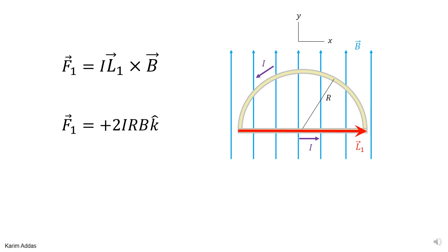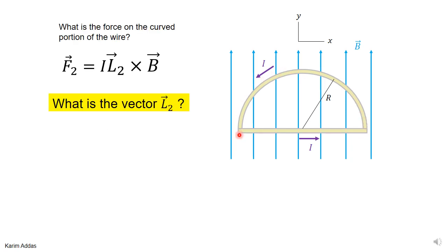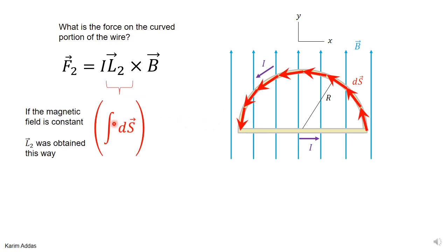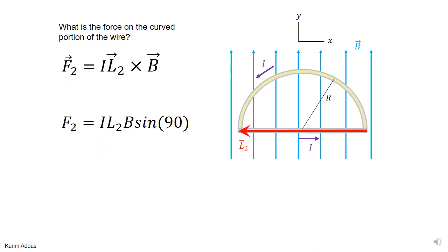Now let's find the force on the curved part as if it's a separate problem. We know it should be the negative of the other one, but let's prove it on its own. Call the force F2. We need to find the vector L2 for the curved part. Going back to the derivation, L2 is a vector that starts from the beginning of the wire and ends at the end, in the direction of the current — it comes from integrating dS. When you add all the dS vectors along the curve, you get one vector from start to end, which is just opposite to L1.